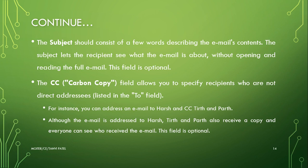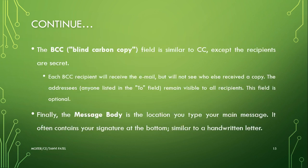The CC (carbon copy) field allows you to specify recipients who are not directly addressed in the To field. For instance, you can address an email to one person and CC others; although the email is addressed to the primary recipient, the CC recipients also receive a copy and everyone can see who received the email. The BCC (blind carbon copy) field is similar to CC, except the recipients are secret — each BCC recipient receives the email but will not see who else received a copy. Finally, the message body is where you type your main message, often containing your signature at the bottom, similar to a handwritten letter.